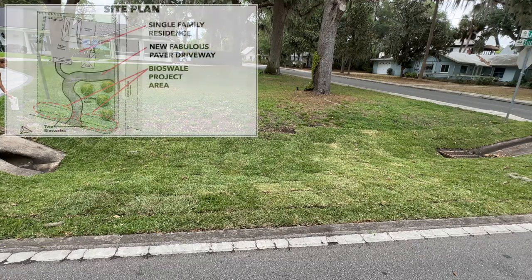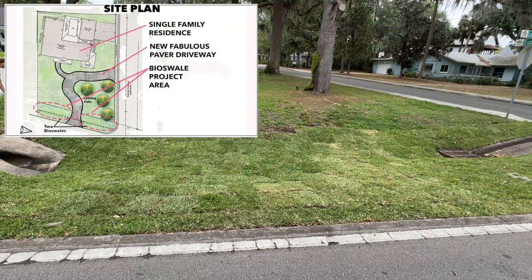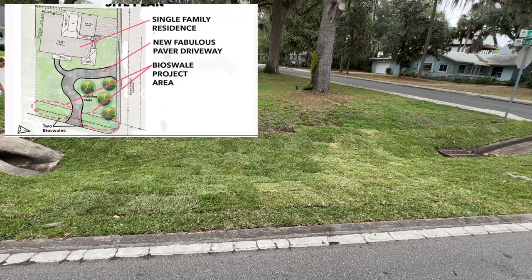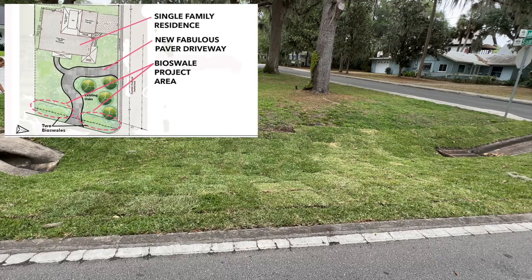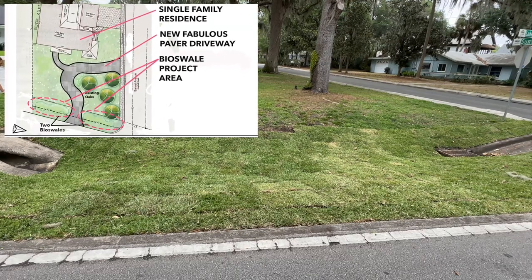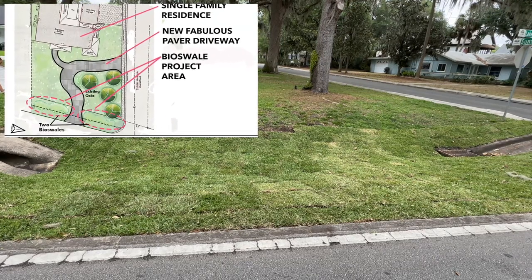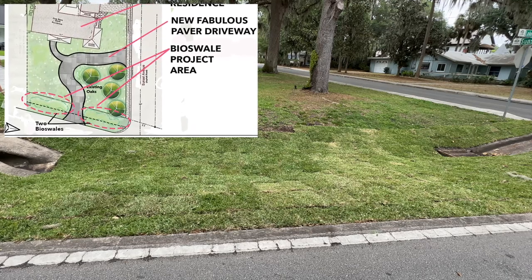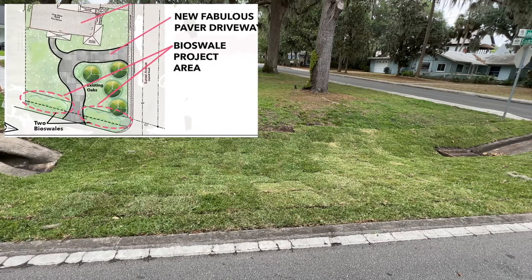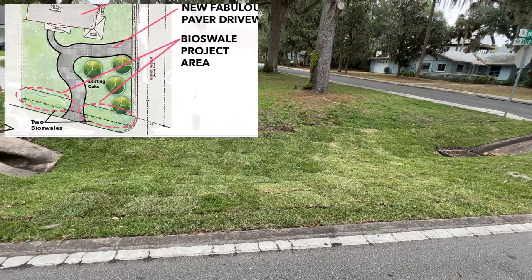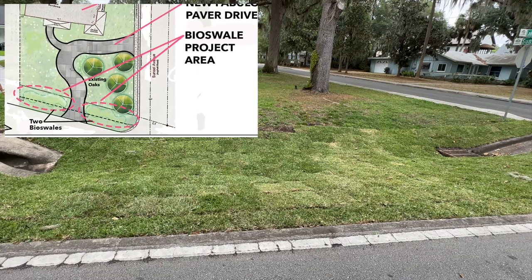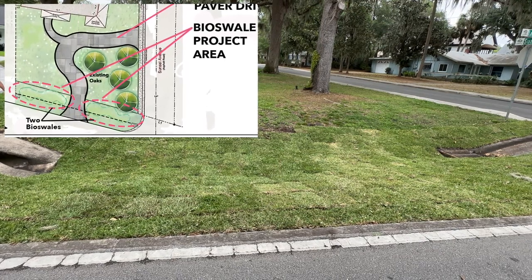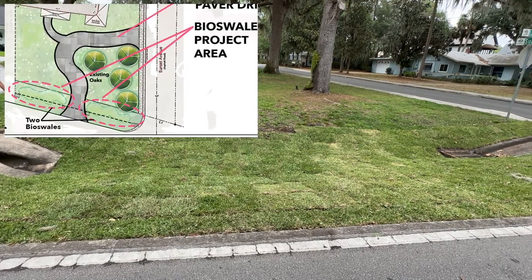What I'm showing you here is the site plan in the upper left, where you can see the single family residence, the new driveway we just completed for Bonnie and Rob, and the bioswale area. There are two bioswales on their property and they're connected by a culvert, so we're going to be addressing both of those.